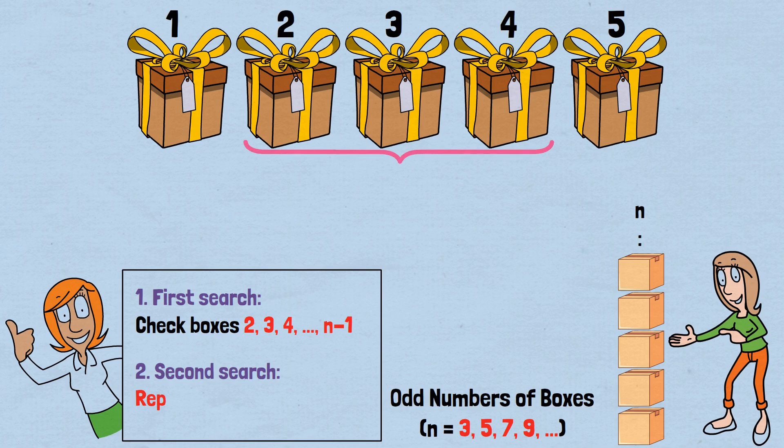2. Second search: Repeat the same sequence. This catches cats starting in even positions in the first search and cats starting in odd positions, now in even positions, in the second search.